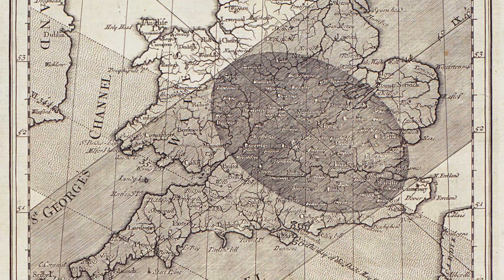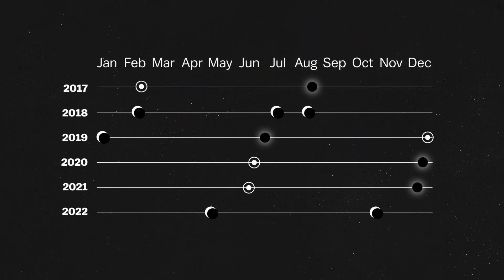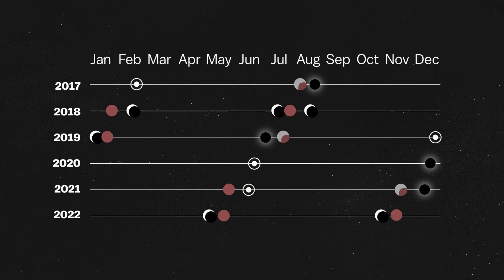There are a ton of orbital quirks that make predicting eclipses really complicated. But in general, we'll have a few solar and a few lunar eclipses of some sort every year.